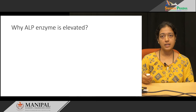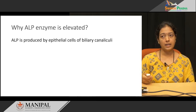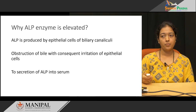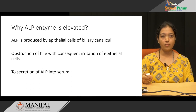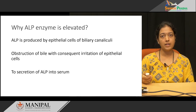The enzyme elevated in posthepatic jaundice is alkaline phosphatase (ALP), produced by epithelial cells of the biliary canaliculi. When there is bile duct obstruction, the bile continuously irritates these epithelial cells, causing ALP to be secreted and its levels to increase in the blood.